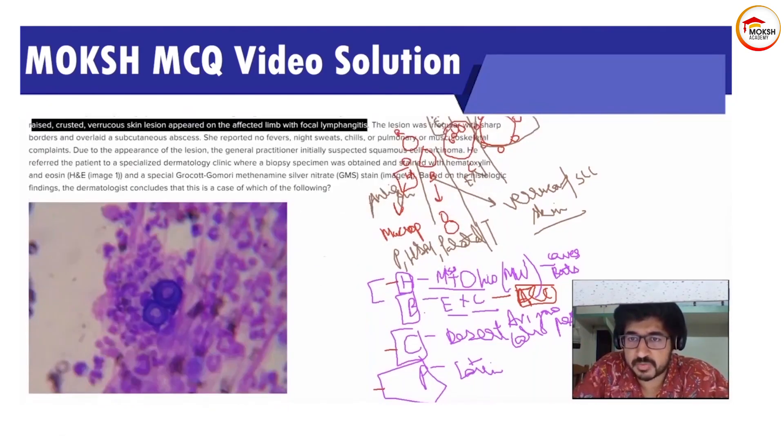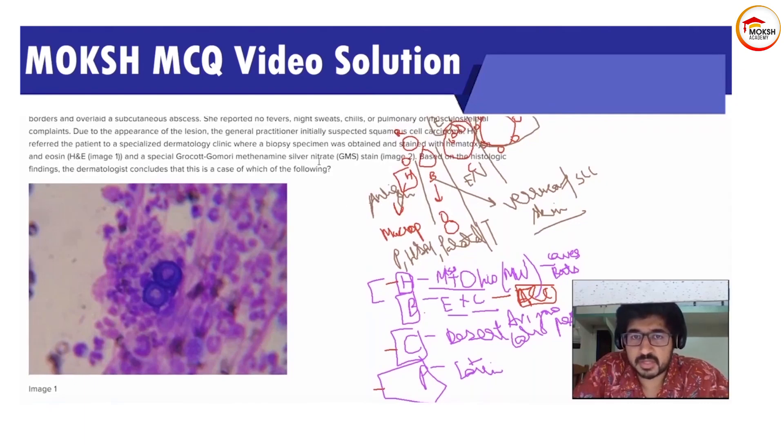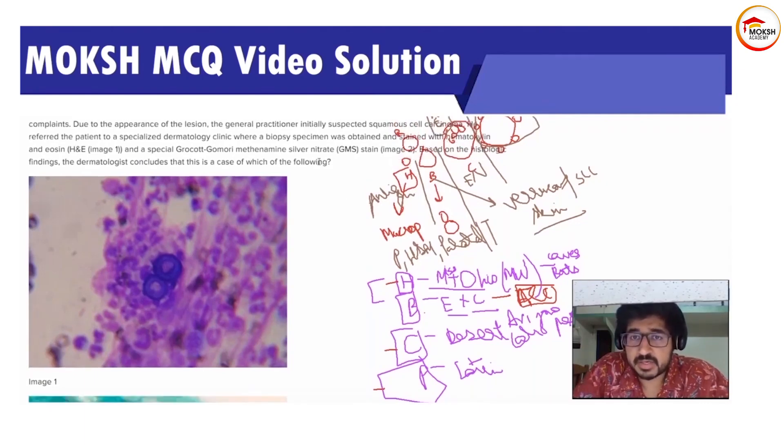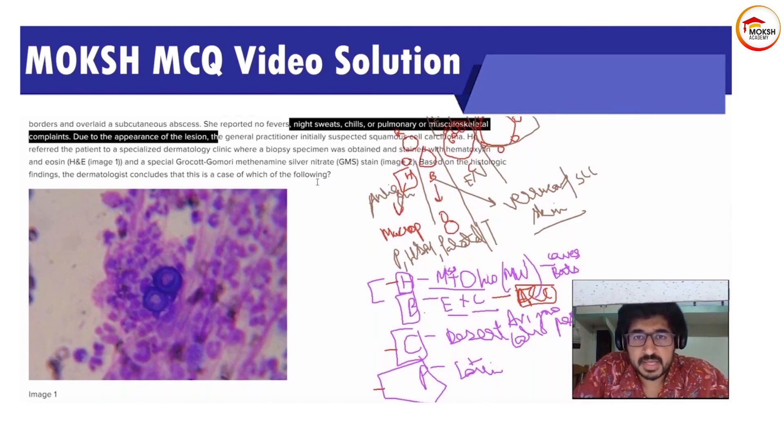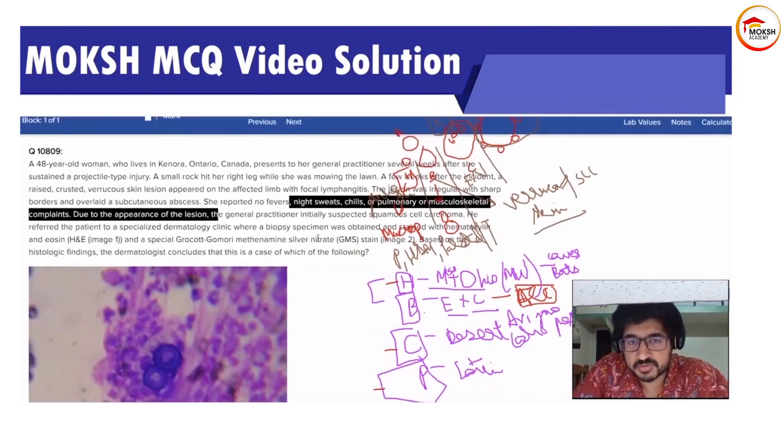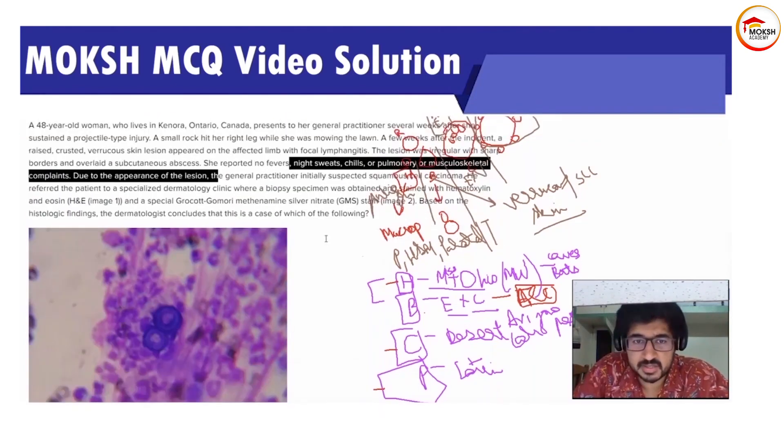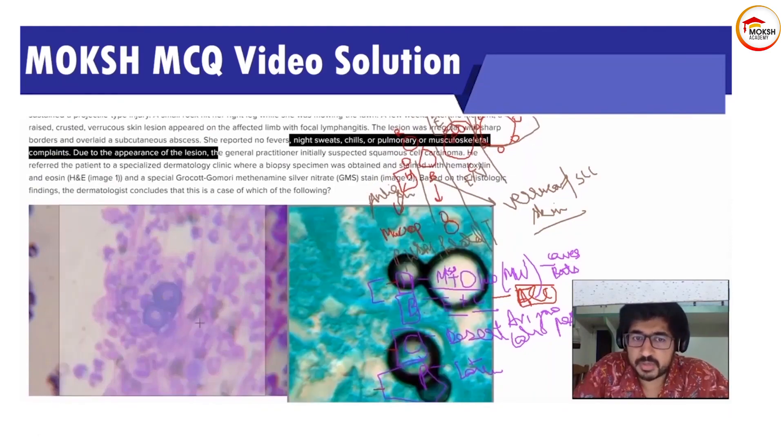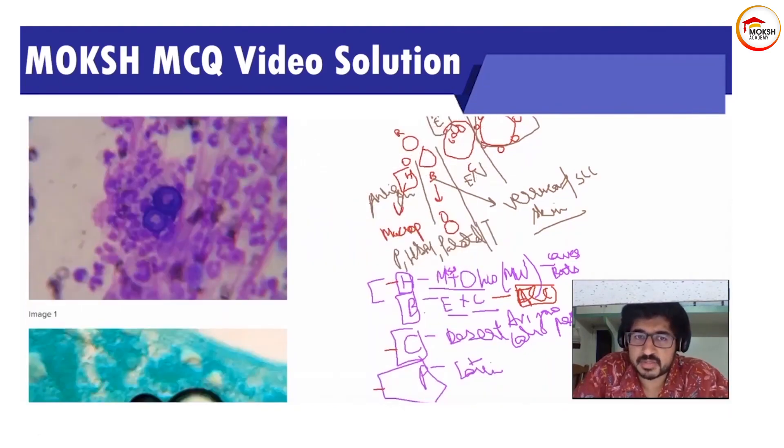It is not necessary that there will be pulmonary symptoms or something. As long as the lesion is there, you have to do a skin biopsy and staining, and that is how you come to it. This is not squamous cell carcinoma; this is your blastomycosis.